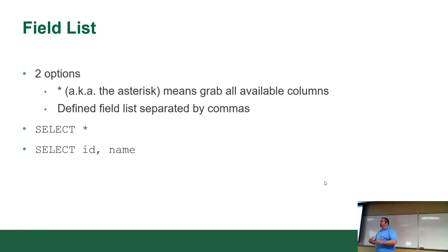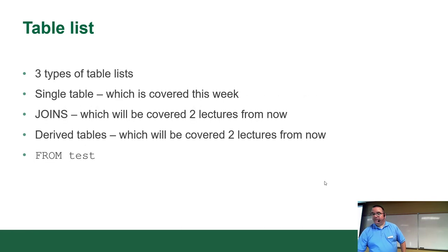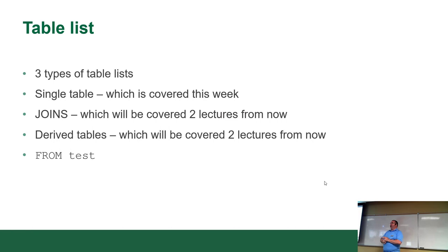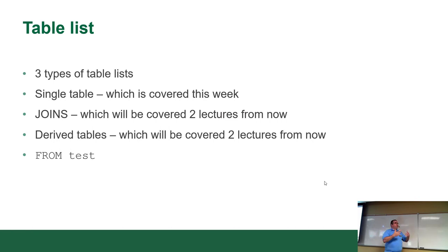When you do SELECT star, it may also change the results of your query because you might be pulling back more than needed. After selecting your fields, you tell it where the data comes from — the FROM clause. There are three types: a single table, which is what we're doing today; JOINs, covered in a future lecture; and derived tables. We're going to worry about single tables today — FROM customers, FROM orders, and so on.